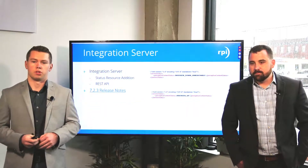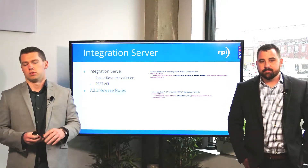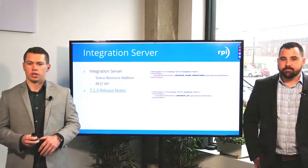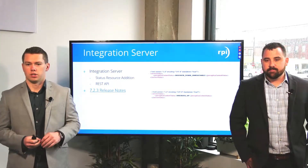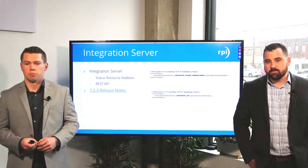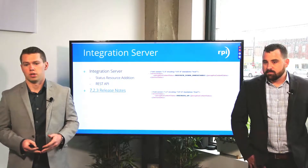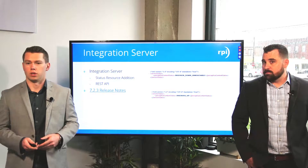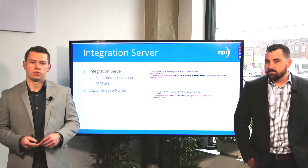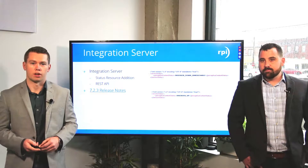We also want to go over a couple of the notable server updates with integration server, specifically around status monitoring. You're now going to be able to look at your server up or down status. We've provided an XML example so you can see what that looks like. One of the biggest points to call out is you can now do this without providing credentials to a REST call, which is going to be convenient for integrating with web-based monitoring tools. The 7.2.3 release notes are linked here for reference material after the webinar.